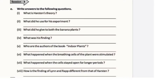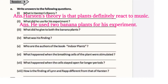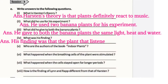Session 8 — Write answers to the following questions. Q1: What is Hurston's theory? Hurston's theory is that plants definitely react to music. Q2: What did he use for his experiment? He used two banana plants. Q3: What did he give to both the banana plants? He gave both banana plants the same light, heat and water. Q4: What was his finding? His finding was that the plant that listened to the music grew faster.